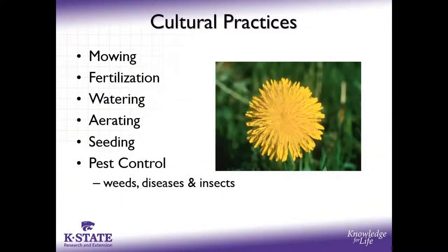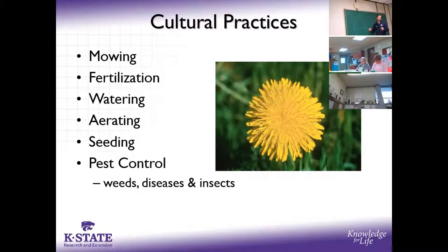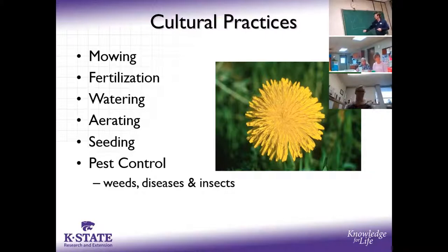Diseases are horrible because they're sneaky and you can't see them. I'd like to start with what's called the disease triangle. You have to have three things with a disease: the first is the disease itself or the pathogen, the second is the host — your turf — and the last thing is the environment.